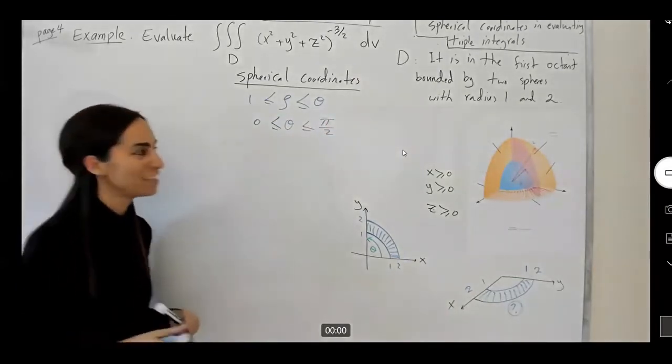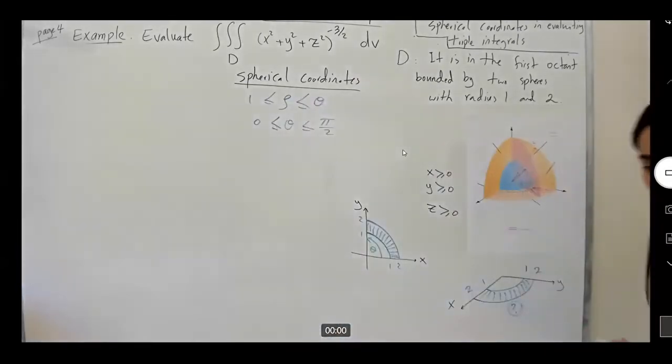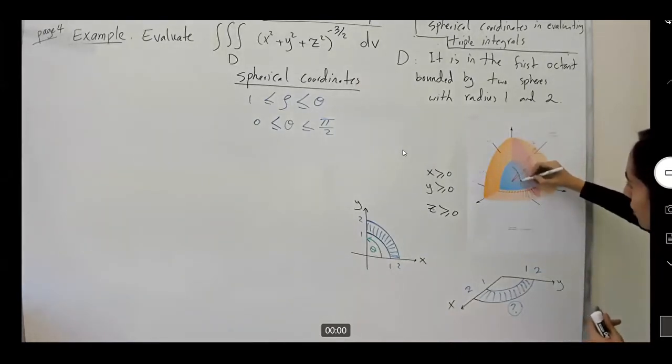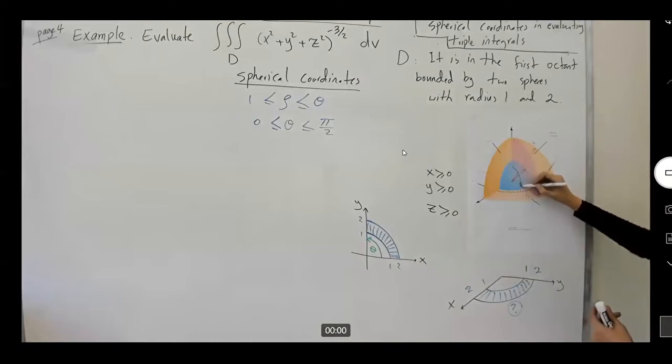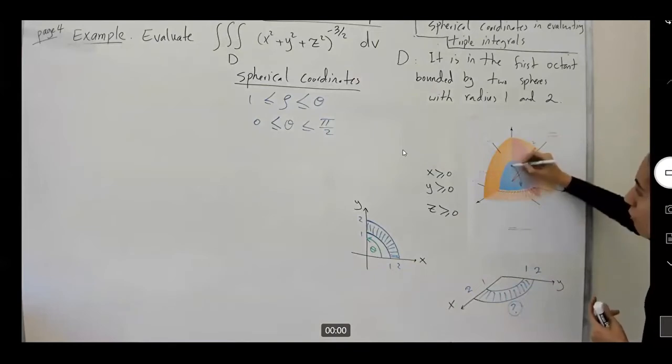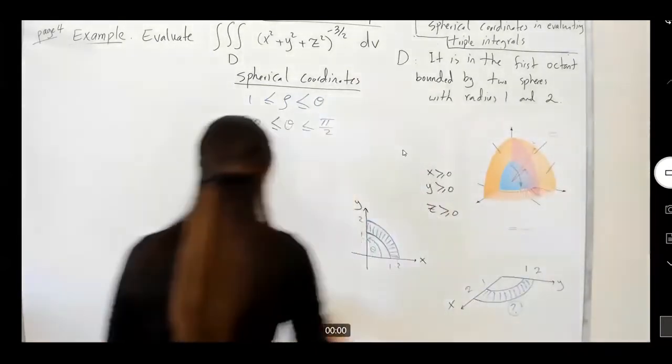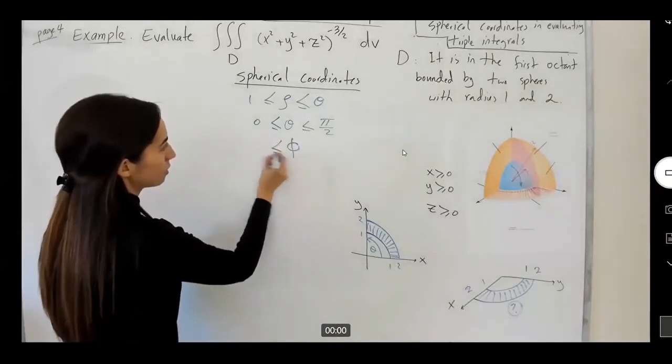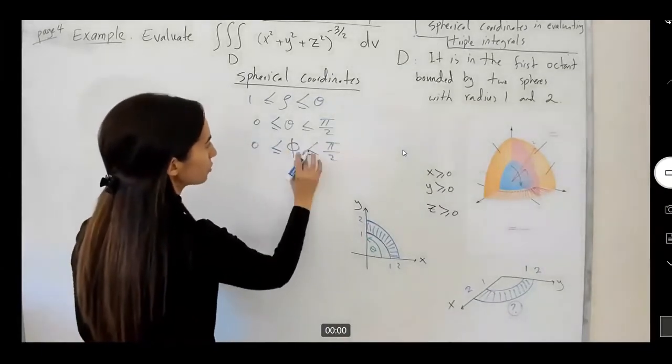How about your phi? Phi was the angle between your point and the positive part of the z-axis. So your phi is actually starts from zero and it stops at pi over two. It just rotates this much. It travels this much. From zero to pi over two. This is your phi. Phi, zero to pi over two.